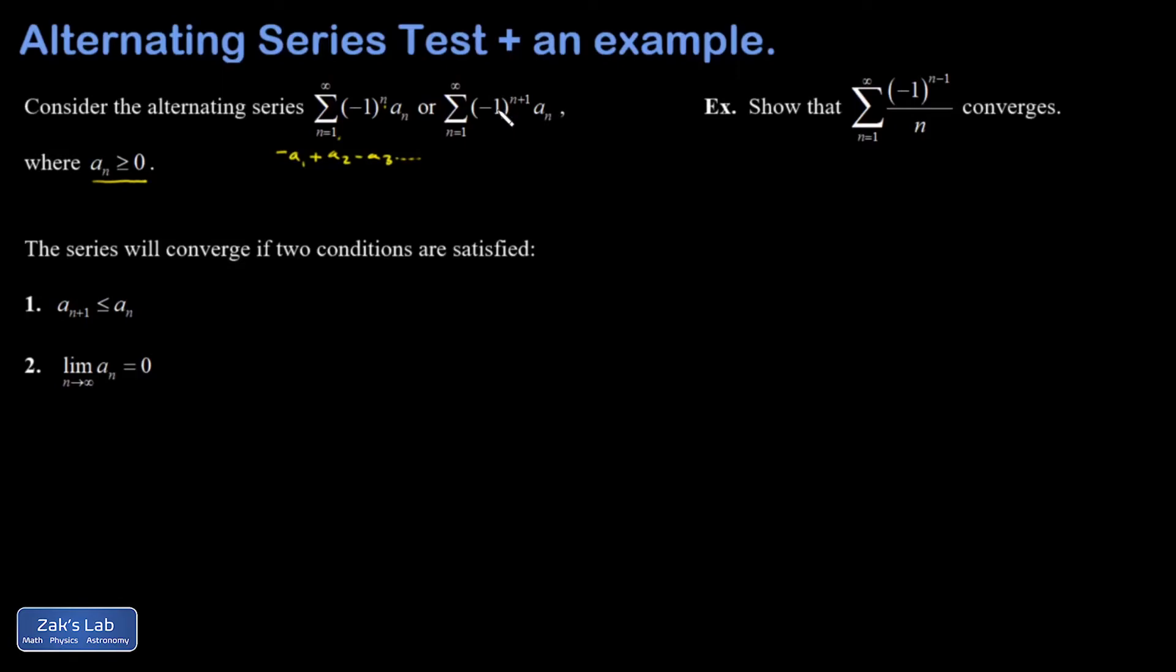So when I plug in n equals 1, I get negative 1 squared, and I get a1. Then I plug in n equals 2 and I get negative 1 cubed. Well, that's negative 1, so minus a2, plus, etc. So the starting point doesn't change anything about the convergence test that we're talking about.